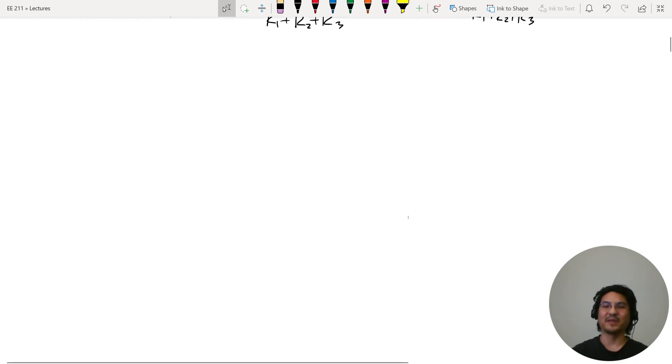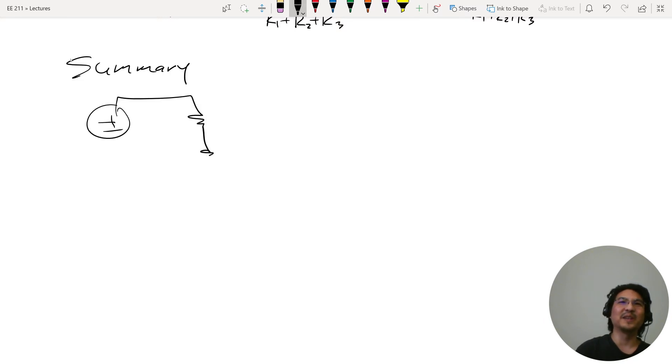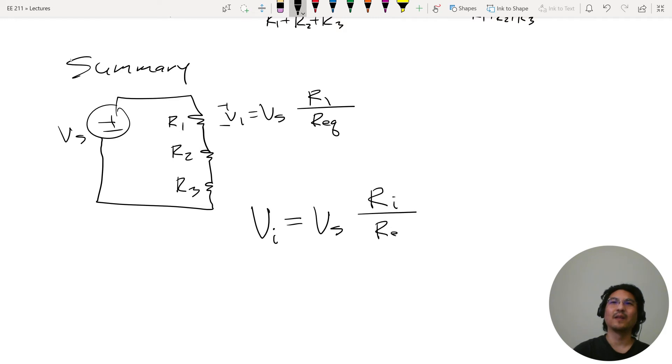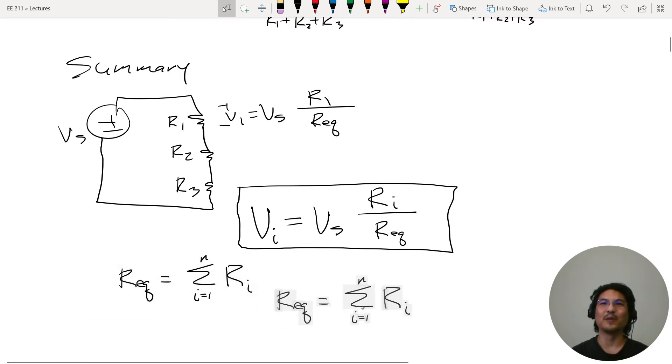So let me just summarize. For voltage divider, however many resistors, let's say this is R1, R2, etc., then this voltage here is Vs times R1 over R equivalent. So it could just be generically for whichever resistor i, Vi equals Vs times Ri over R equivalent. And then R equivalent is just the sum in series, if you have N of them, R1 plus R2 up to RN. So this is the voltage divider equation and the equivalent resistance which is in series.